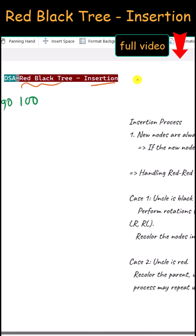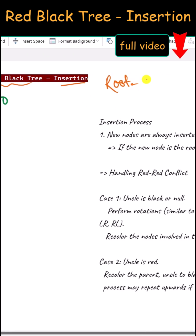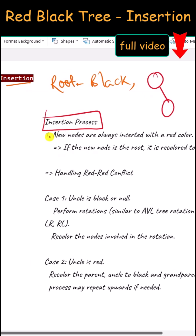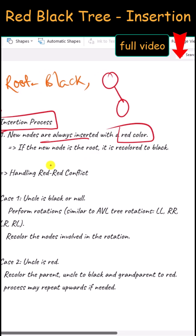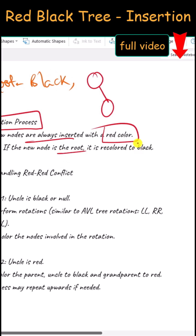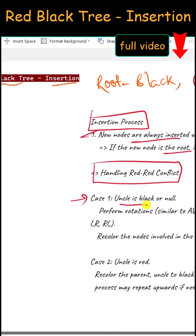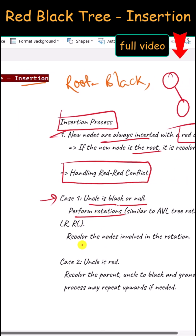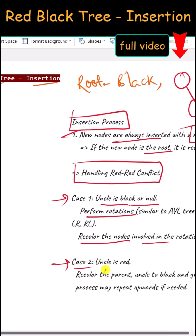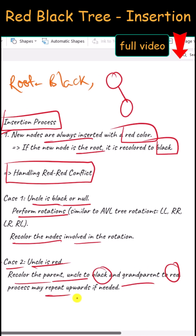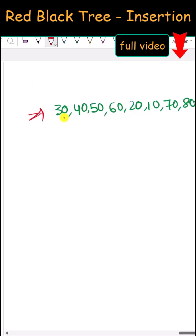In a Red-Black Tree, the root node will always be black and two red nodes cannot be directly connected. Newly inserted nodes will have the red color, but if that is the root node it will be black. If there is a red-red conflict and the uncle is black or null, we perform a rotation and recolor. If the uncle is red, we recolor the parent and uncle to black, the grandparent becomes red, and we repeat the process upwards.